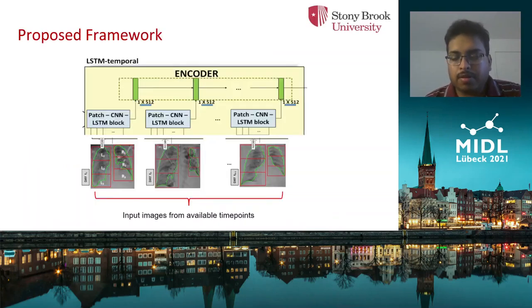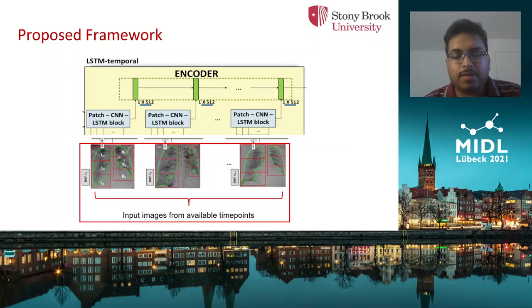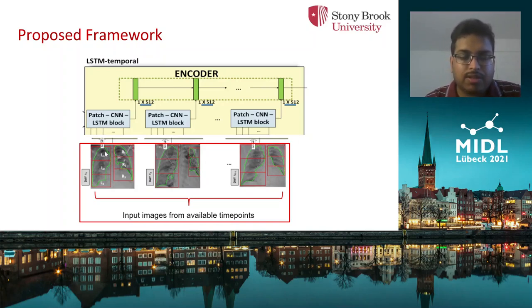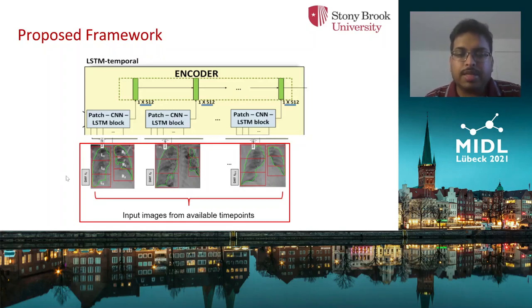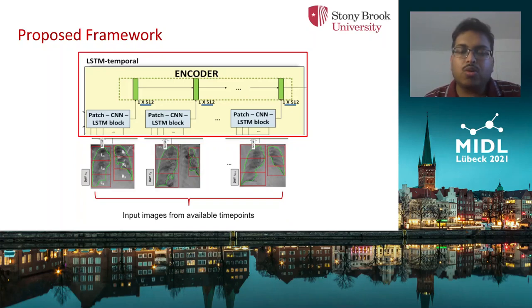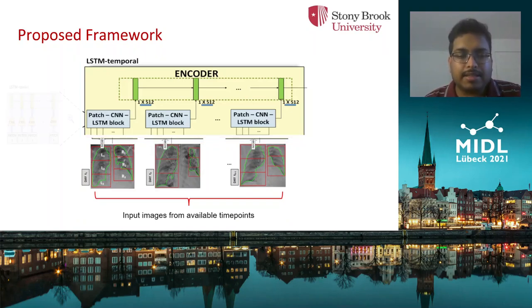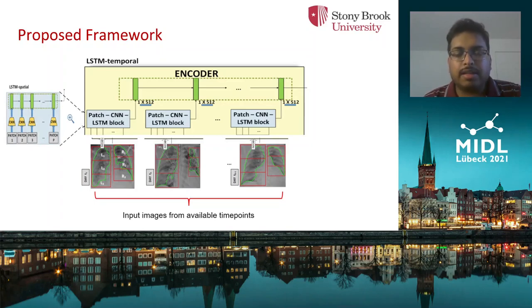Here we present our framework. Firstly, patches are extracted from the lung segmentations of the input chest X-rays, which are available from different time points. When dealing with a particular lung zone — for example L1, the left lung upper zone — we also include patches from the boundaries of neighboring zones like R1, the right lung upper, and L2, the left lung middle zone. These patches along with the disease severity scores are used as input to the two-stage encoder network. The first stage is a patch CNN-LSTM block where CNN is used to extract features from patches and feed them into each time step of LSTM 1, called LSTM spatial.